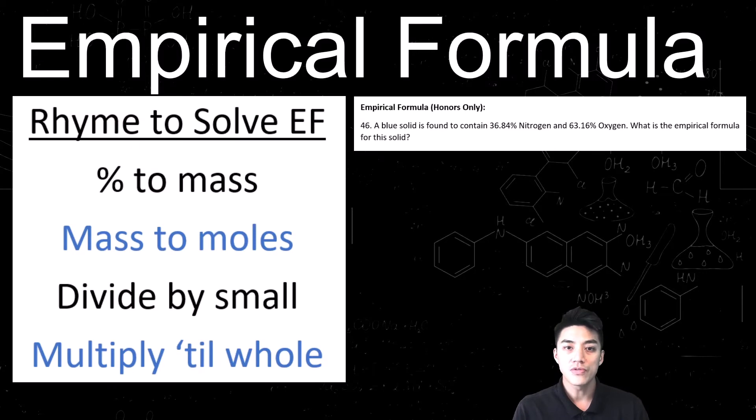I'll give you an overview on how most of these problems look when you're being asked to solve for the empirical formula. So typically you're given the percent composition, and there are four steps that I've outlined in a rhyme that you can remember so that you can solve these types of problems. So it goes like this: percent to mass, mass to moles, divide by small, multiply to a whole. So I'll demonstrate this rhyme in problem number 46, and we'll work out this problem together.